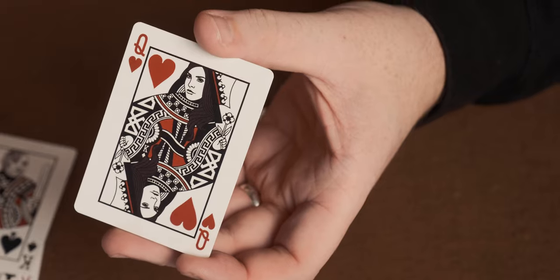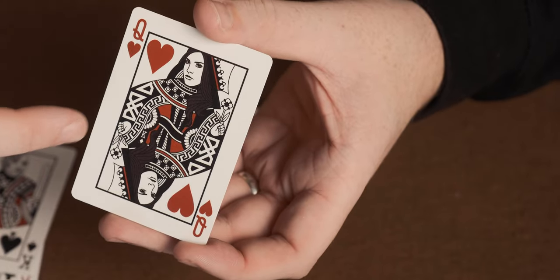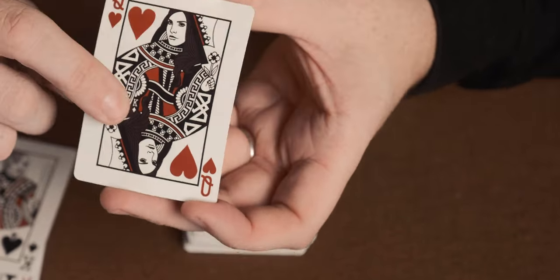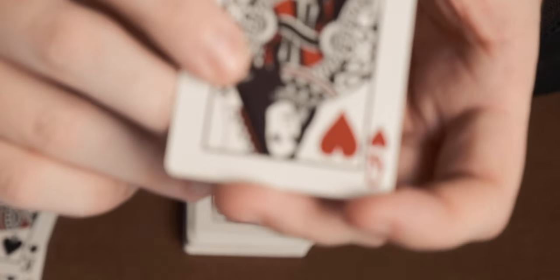Next up the deck is the Queen of Hearts and on both sides it's got the new logo on there as well. And there's also a card reveal just there which is the King of Diamonds.